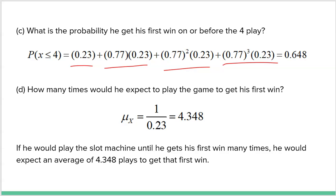That's it for the Geometric Distribution — the final topic of Unit 4, and actually a fairly easy topic. The key is recognizing when a problem is geometric: independent events with success or failure outcomes, and we're looking for the first success. That's it. Very different from the binomial model, where you have a set number of trials and count how many successes occur within them. We're done with Unit 4!